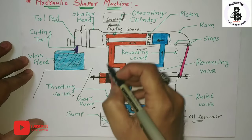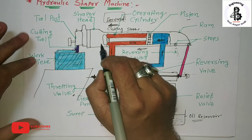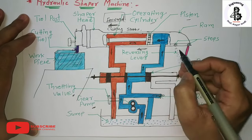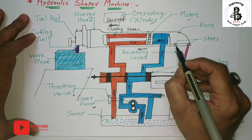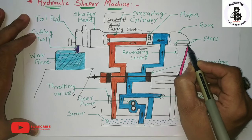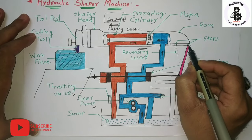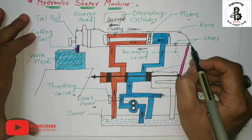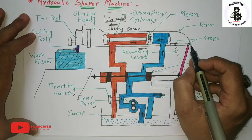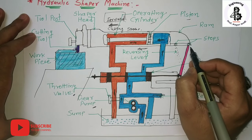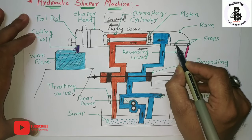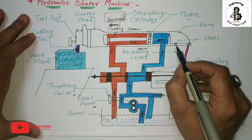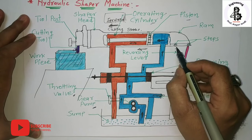At the end of the forward stroke, stops fitted at the bottom of the ram act against the reversing lever, causing the valve to change its position within the valve chamber.